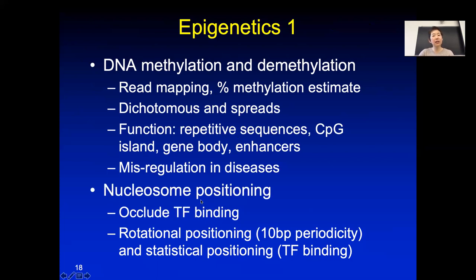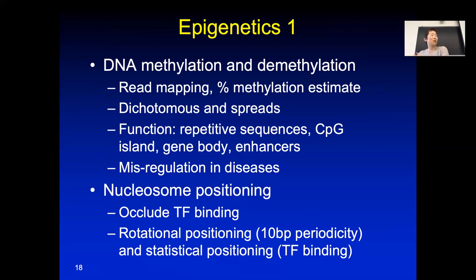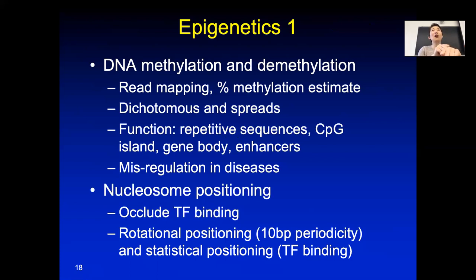The next aspect of epigenetics is nucleosome positioning. Nucleosomes on the genome are like a pearl necklace — they help package the genome into more compact structures. The very basic unit of chromatin compaction is the nucleosome: 146 nucleotides wrapped around eight histone proteins. Very often this prevents transcription factors from binding. For a transcription factor to bind a region, it either goes to the region between two nucleosomes, or some transcription factors can squeeze out the nucleosome — those are called pioneer factors. They can remove DNA methylation, remove histones, and open up the region for other transcription factors to bind.